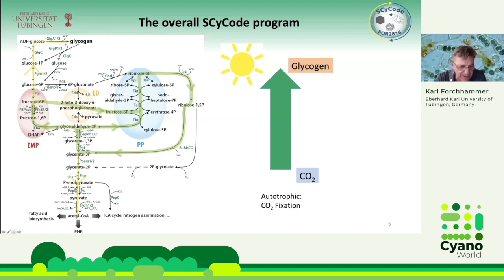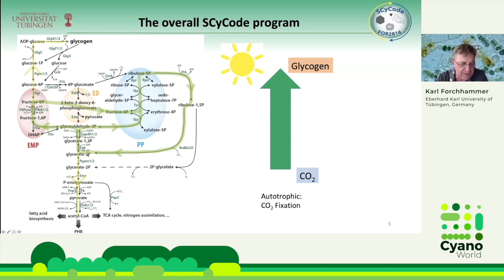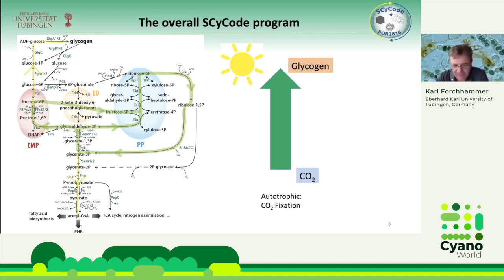To briefly explain: when you fix CO2, the first stable fixation product is glycerate-3-phosphate. From there, via the lower glycolysis pathways, you can derive most of the organic molecules used as cellular building blocks — like fatty acids, amino acids, pigments, and so on. All this comes from reactions of freshly fixed CO2 going into the lower glycolytic routes first.